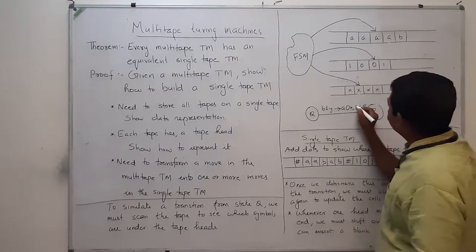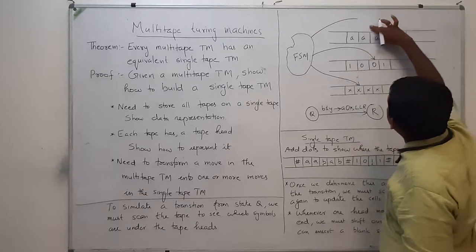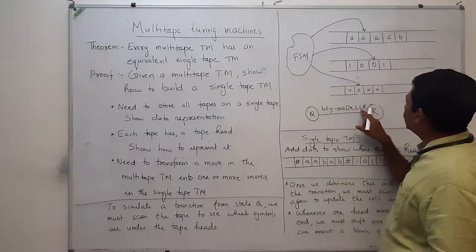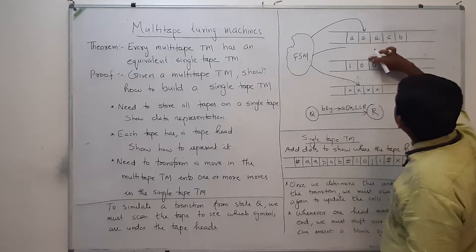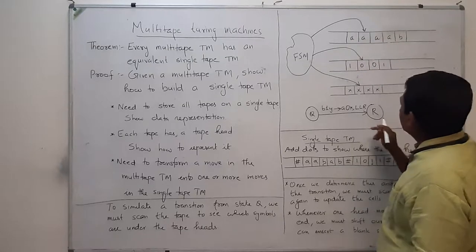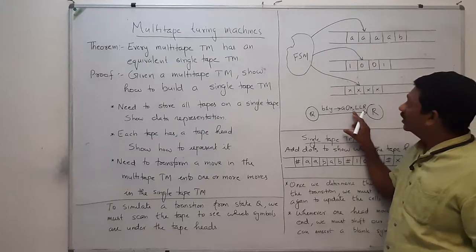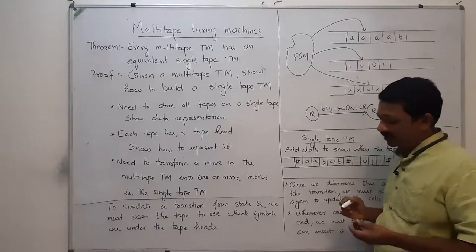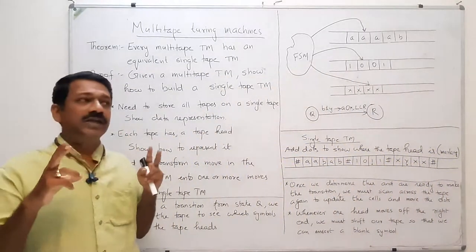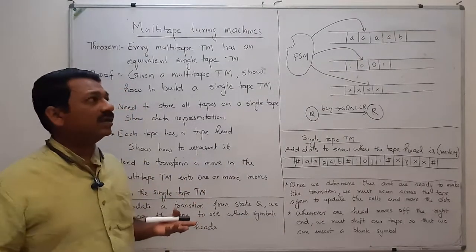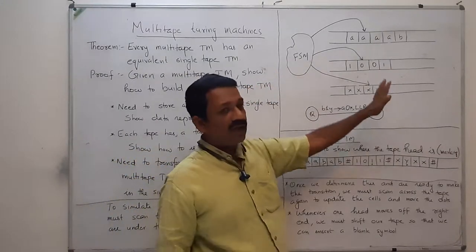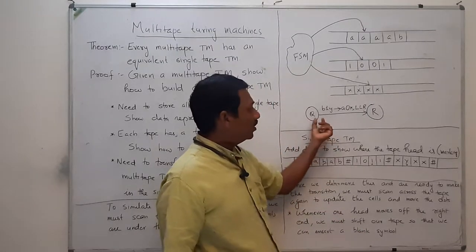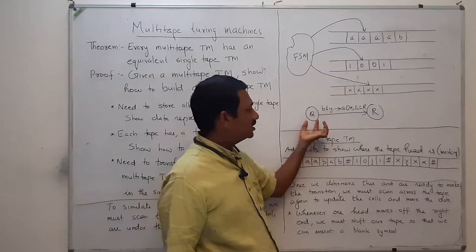Now the moves: the first tape head is moving left, meaning it is now pointing to a new location. The second tape head is also moving left. And the third tape head is moving right. Depending on the three inputs read by the three tape heads, each tape head is either moving right or left. The state is changing from q to r.